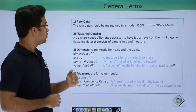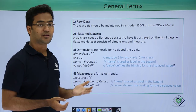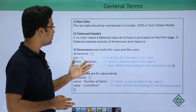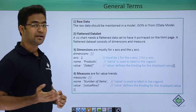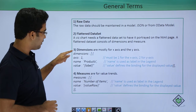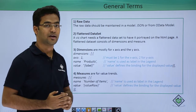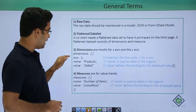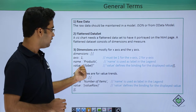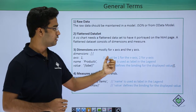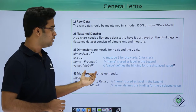Let us look at some general terms. The first is raw data — the data that should be plotted into these charts. Raw data can be in the form of a JSON model or an OData model. The second is the flattened data set. A Viz chart generally needs a flattened data set to be portrayed on the HTML page, and this flattened data set consists of dimensions and measures. Dimensions are mostly used for the x-axis and y-axis. Here we have mentioned the dimension with axis 1 standing for x-axis and axis 2 for y-axis, and we give the name as 'products'. The name is used as a label in the legend. The value is bound using a JSON model or other model.